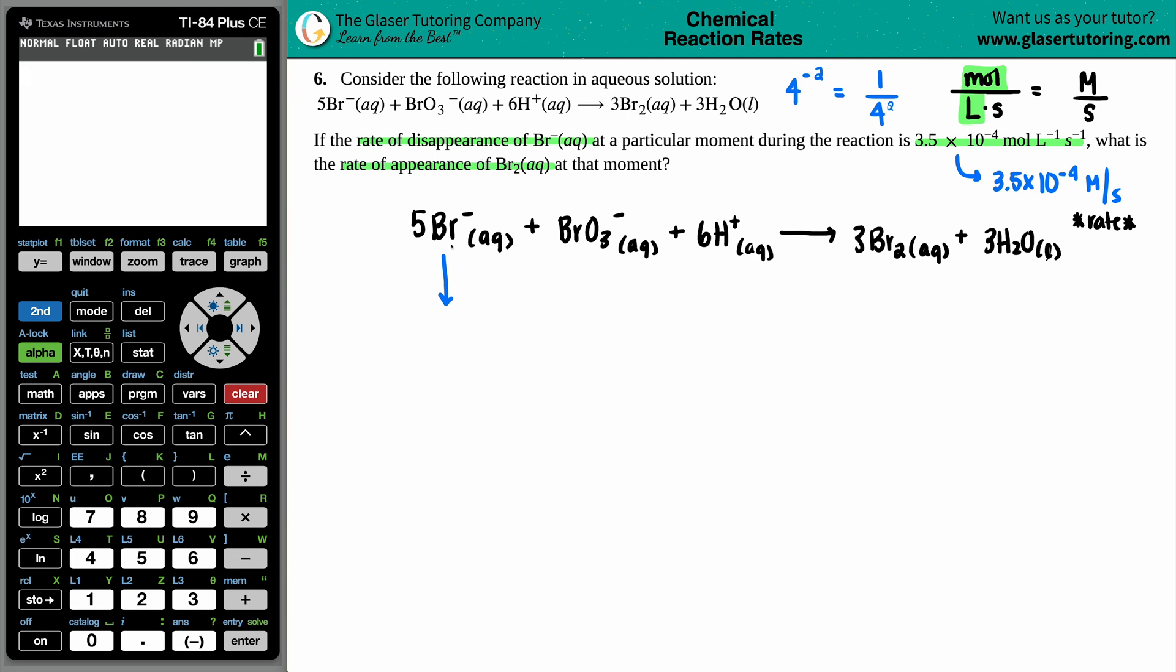So disappearance just means that this is going to go down by a rate of 3.5 times 10 to the negative fourth molarity per second. And now the question's asking for, what is the rate of appearance? Appearance just means that it's going to be showing up and it checks out because it's on the product side. So we're basically looking for this rate.